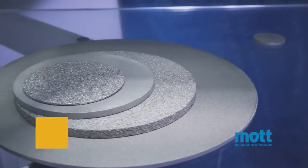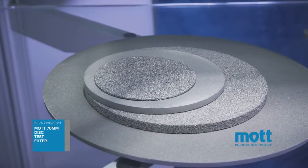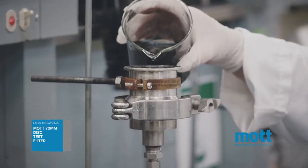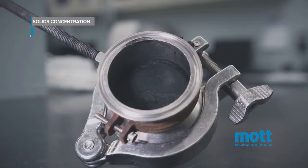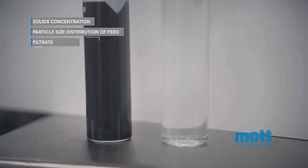Initial evaluation uses the Mott 70 millimeter disk test filter for separation of your feed sample to determine solids concentration, particle size distribution of feed, and filtrate quality.